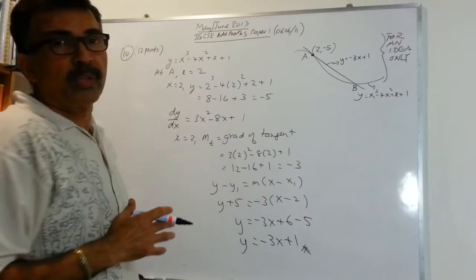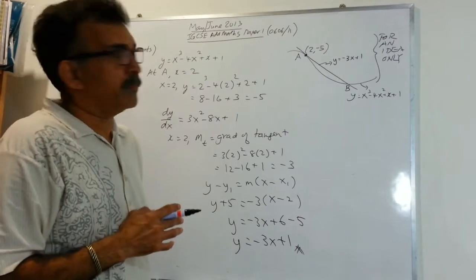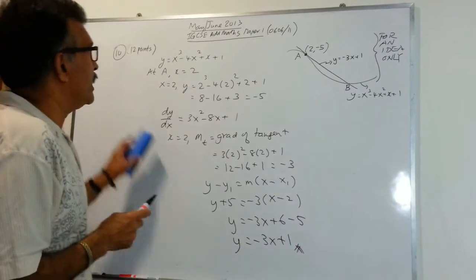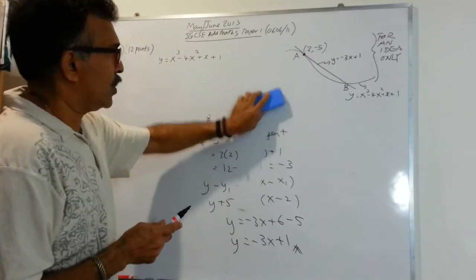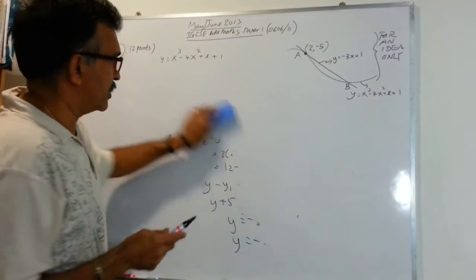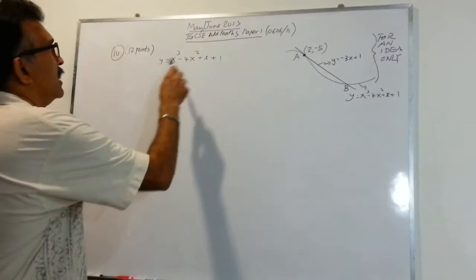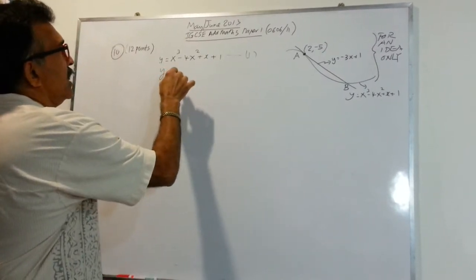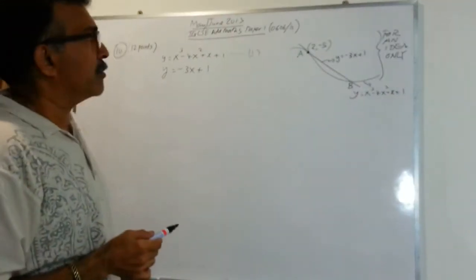Then they tell you that this tangent line meets the curve again at B. So we have to find the coordinates of B. Now, the coordinates of B. B is a point of intersection. So we have to carry out simultaneous equations. So this will be equation 1 and equation 2 will be the line that we just obtained,